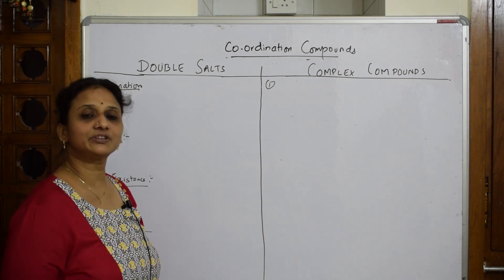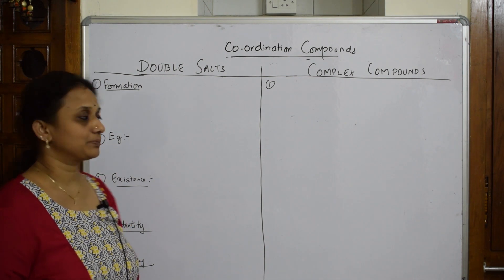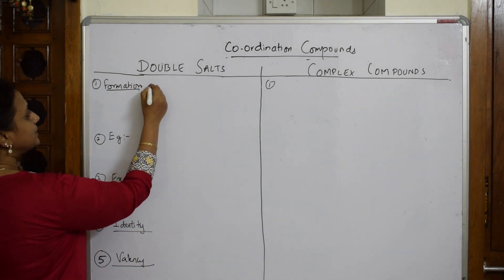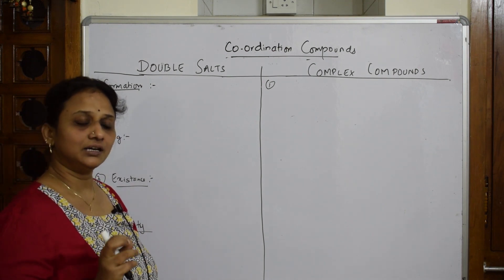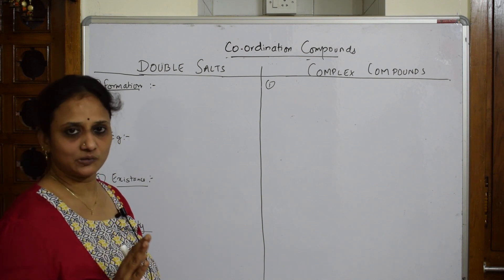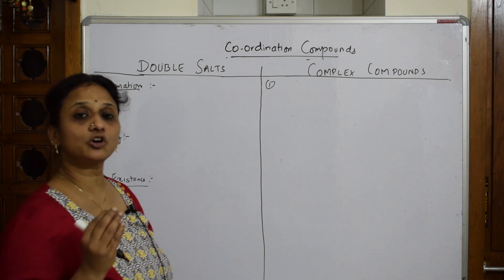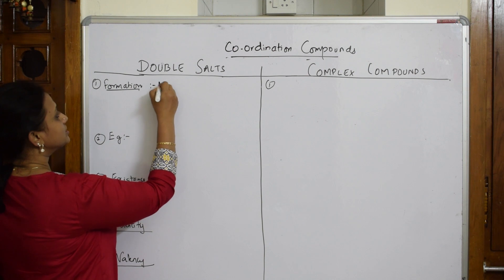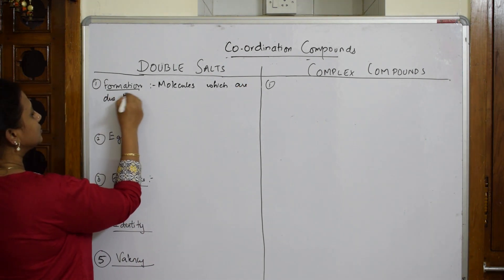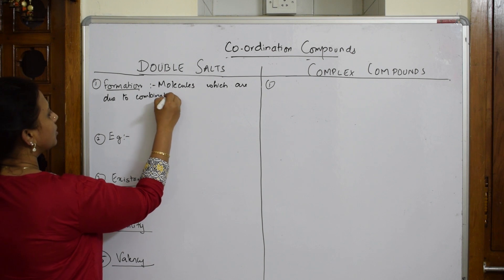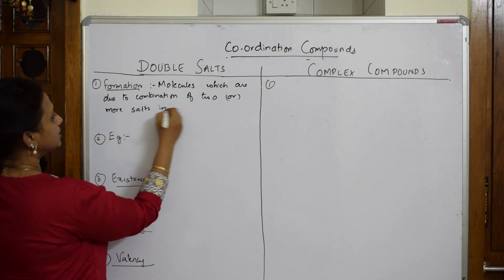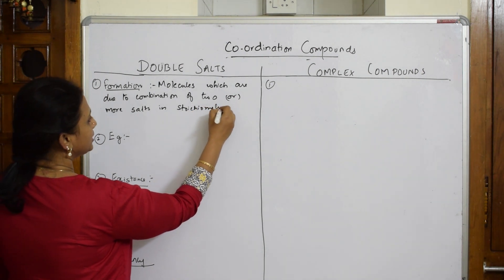I've divided the differences into subtopics — try to write this in the exam also. Regarding formation: double salts are molecules which are formed due to the combination of two or more salts in stoichiometric ratio. Both the ions combine in a fixed stoichiometric ratio.